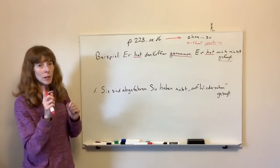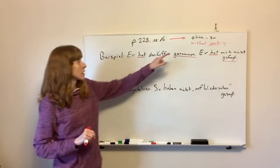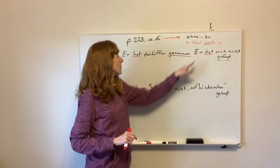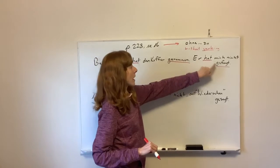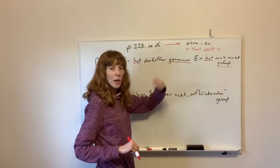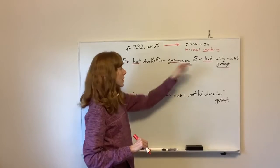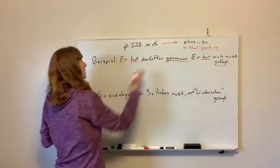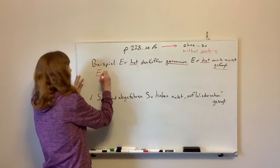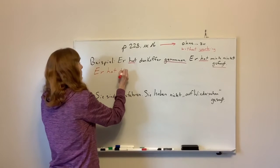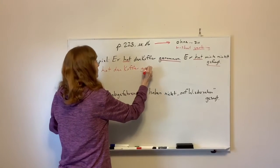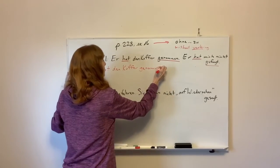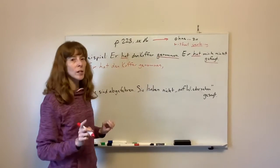Okay, so we're going to combine these two together and make one sentence using ohne zu. So we could technically take this second sentence, he didn't ask me, and we could change that to something like, without asking me. So that's what we're going to do. The first sentence will remain the same. Er hat den Koffer genommen, comma.